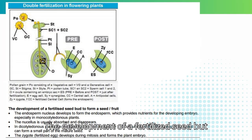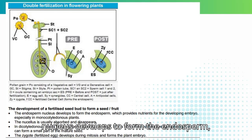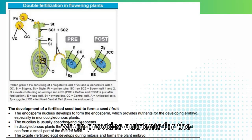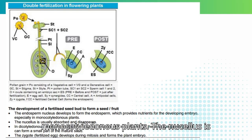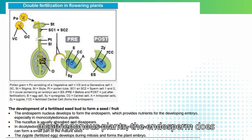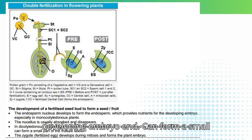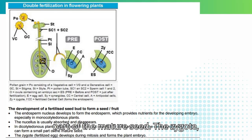The development of a fertilized seed bud to form a seed or fruit. The endosperm nucleus develops to form the endosperm, which provides nutrients for the developing embryo, especially in monocotyledonous plants. The nucellus is usually absorbed and disappears. In dicotyledonous plants, the endosperm does not develop, or it is consumed by the developing embryo and can form a small part of the mature seed.